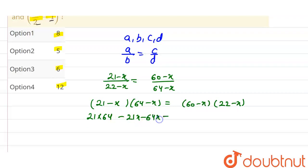The x squared terms cancel. We have 21 times 64 minus 85x equals 22 times 60 minus 82x.